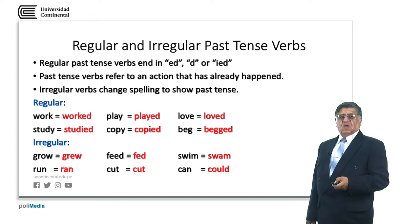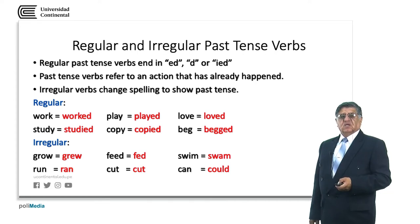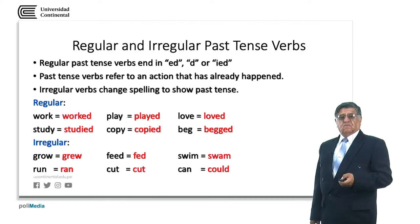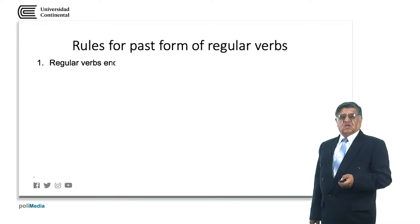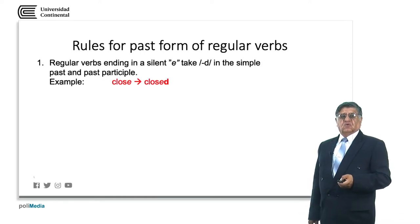Play doesn't change the y because the final y is preceded by a vowel. Grow, grew — that's an example of an irregular verb. Feed, fed. Swim, swam. Run, run. Cut, cut. Can, could. We have many more irregular verbs, but you need to learn them on a regular basis by reading or writing. Practice is the only way to learn, understand, and use English or any language.